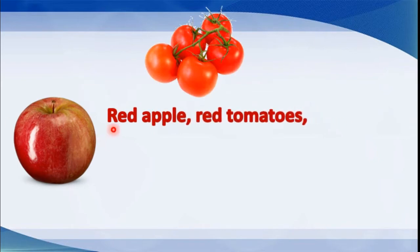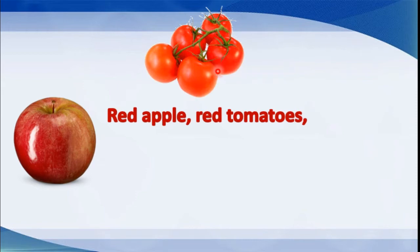Now the second stanza. Red apple - this is apple, it is red in color. What is the color of the apple? It is red colored. Red tomatoes - this is a vegetable, your mummy brings from the market. These are called tomatoes and they are red in color. Red apple, red tomatoes.